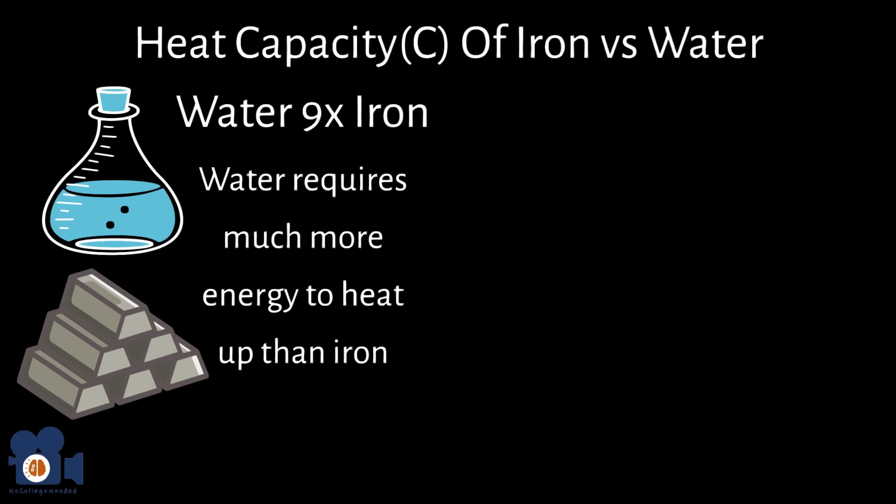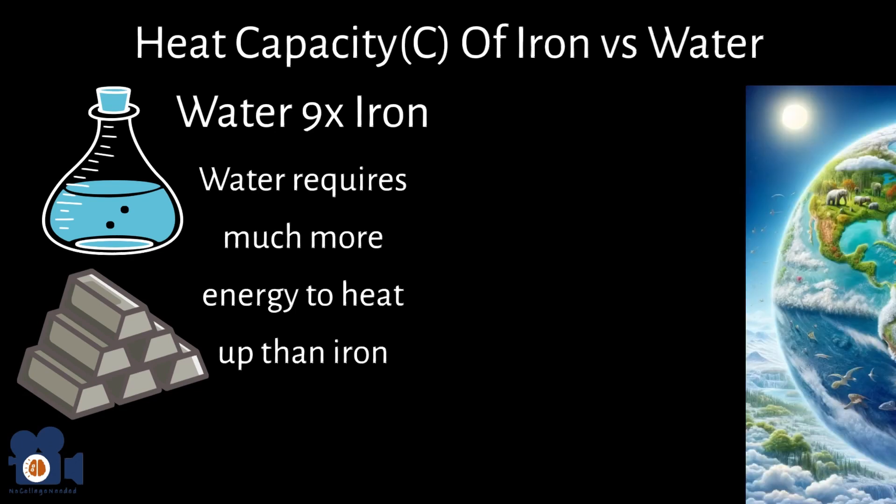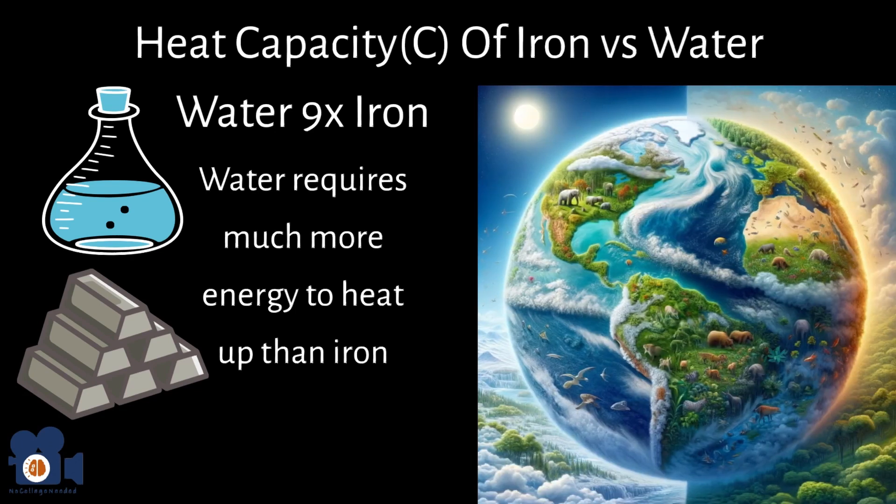Interestingly, the high heat capacity of water is one of the reasons that life on Earth is possible. The vast multitudes of it is what keeps the temperatures on Earth more constant than other planets because it can absorb the heat from the sun without getting extremely hot itself.